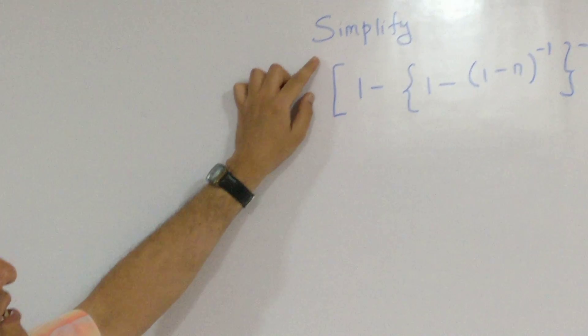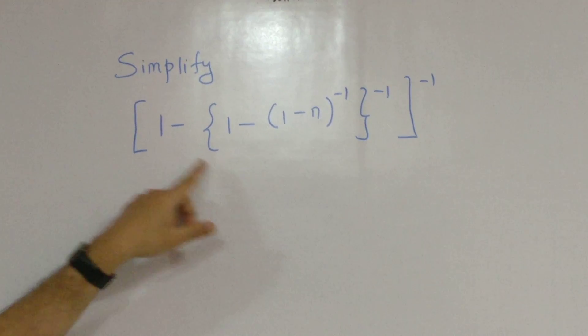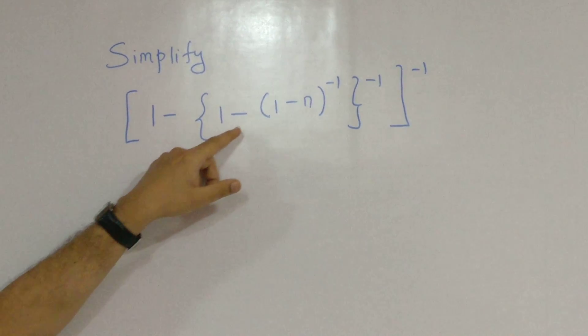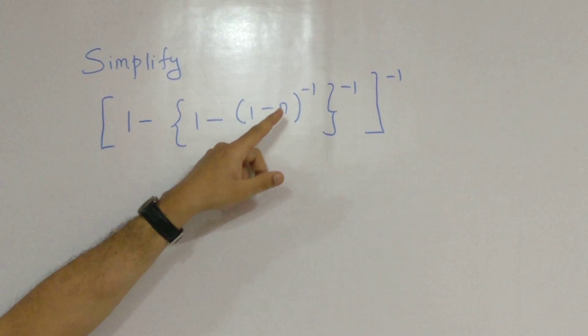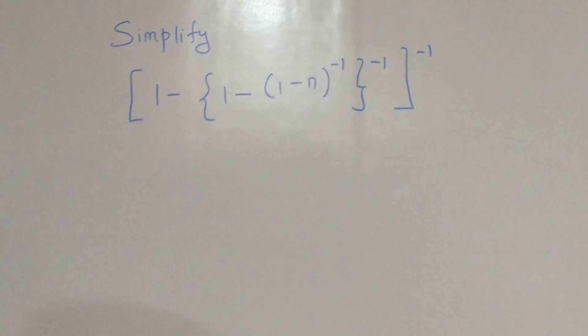What is the first sum given? Simplify. Within many parenthesis brackets involved. So 1 minus, curly bracket 1 minus 1 minus n, whole raise to minus 1, curly bracket close minus 1, box bracket close minus 1.